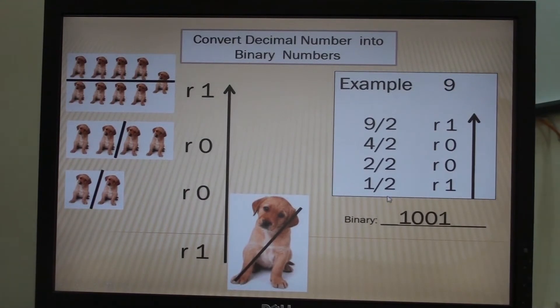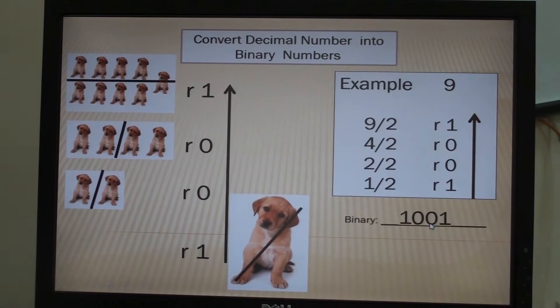So the answer, read from left to right, is 1, 0, 0, 1. The decimal number 9 in binary is 1001.